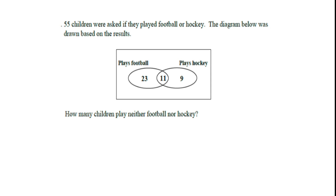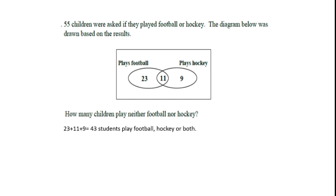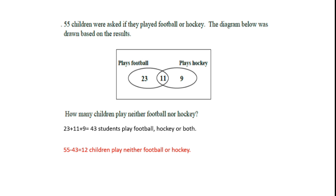55 children were asked if they played hockey or football, and the diagram below was drawn based on the results. How many children could play neither football nor hockey? First, let's work out how many students play football, hockey or both — that's 23 plus 11 plus 9, which gives 43 students. Since 55 students were asked originally, you take away 43 to reach the conclusion that 12 students play neither football nor hockey. You can write 12 outside the Venn diagram as it satisfies none of the conditions.